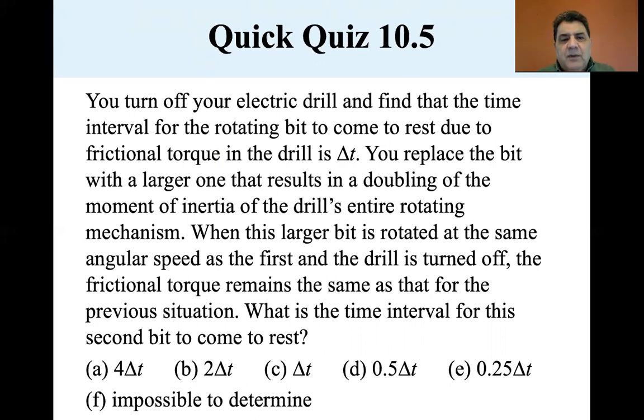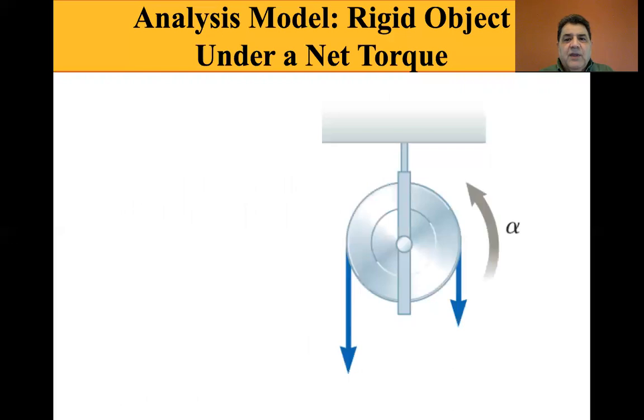What is the time interval for this second bit to come to rest? Well, if you double the moment of inertia, then it takes twice as long, two delta T, to come to rest.